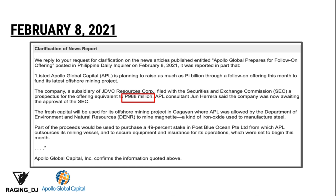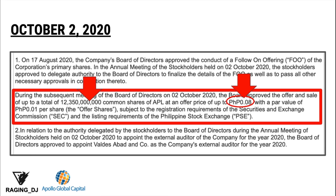So what information can we extract from this? Going back to October 2, 2020, they said they would offer 12.3 billion common shares at a price of 0.08 pesos. On February 8, 2021, they said they would generate 988 million pesos. Now let's connect the dots: on October 2, 2020, they said they would generate 12.3 billion shares at a price of 0.08 pesos.